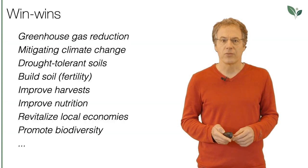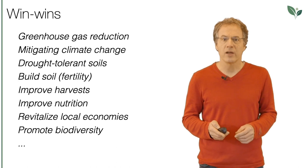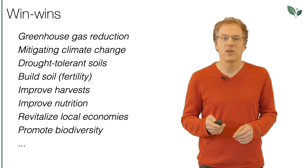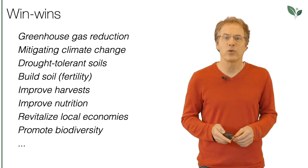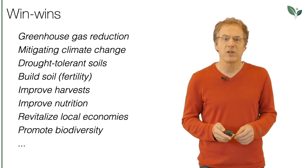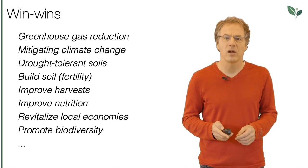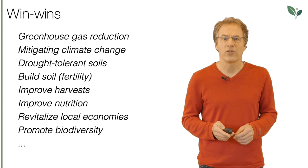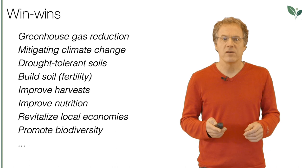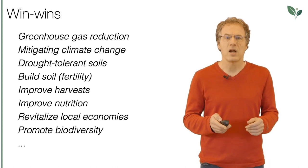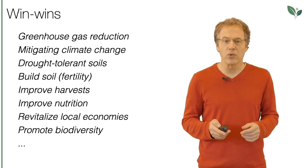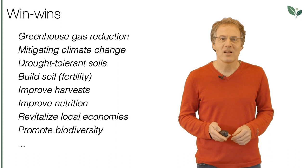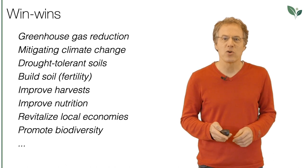If we use the methods of regenerative agriculture outlined in this lesson and others, then we can achieve many win-wins. We can reduce greenhouse gas emissions and even extract carbon dioxide from the air to store it in the soil and wood of trees, which in turn can mitigate climate change. We develop drought-tolerant soils, build up soil fertility, achieve increased harvests, and improve nutrition. We can revitalize local economies and promote biodiversity.